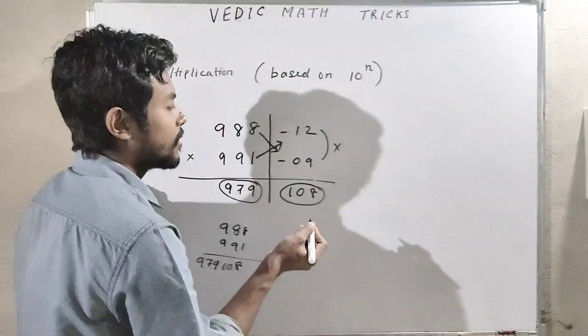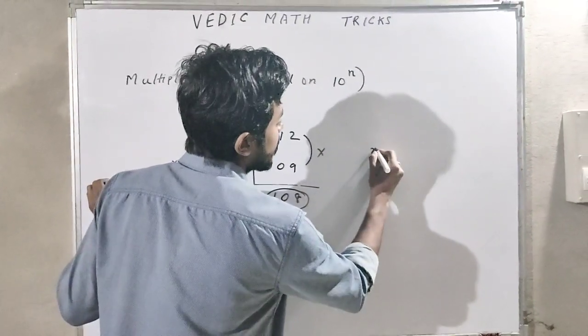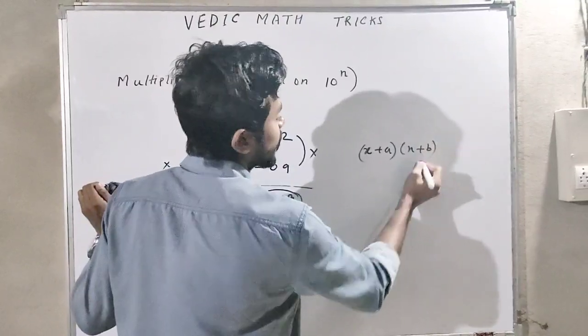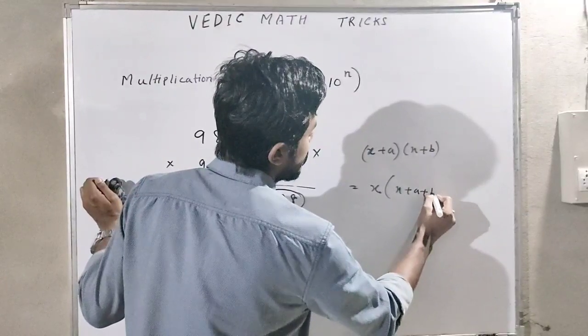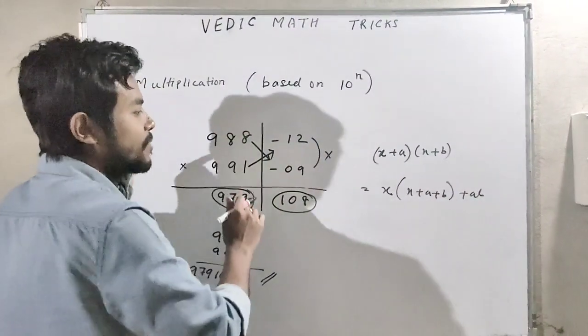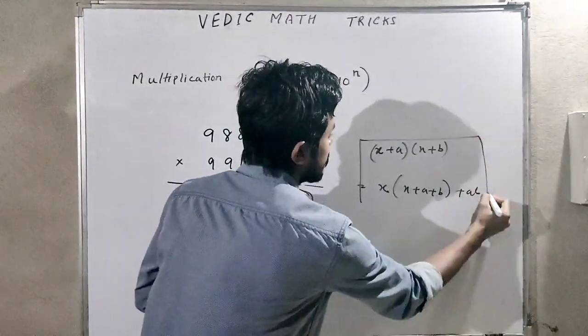The main principle of this method, of this trace, is (x + a) into (x + b), which we can write as x into x plus a plus b plus ab. This trace is based on the principle of this.